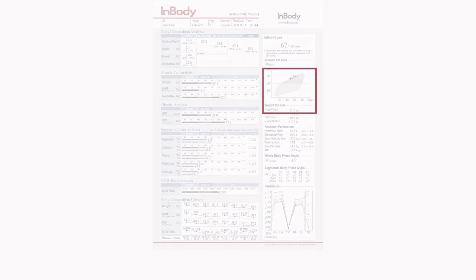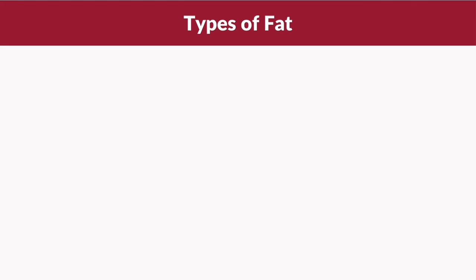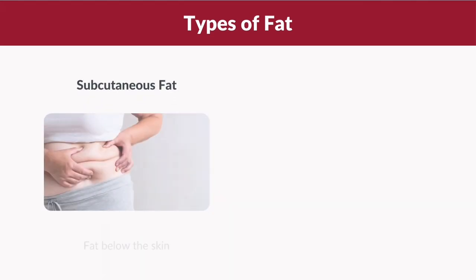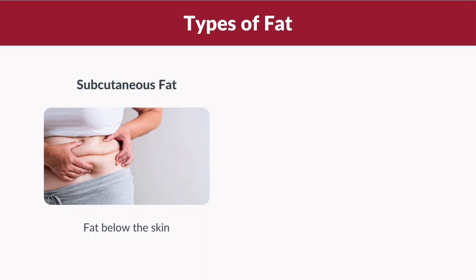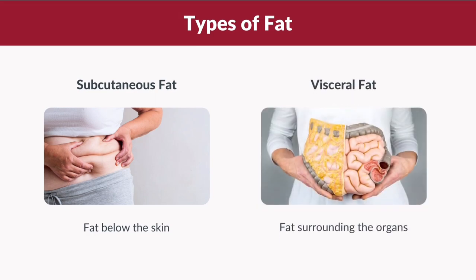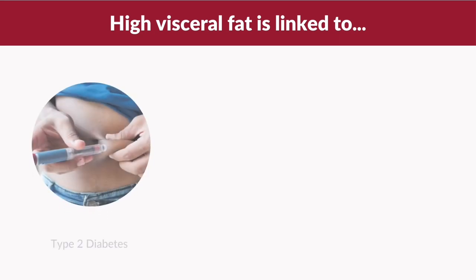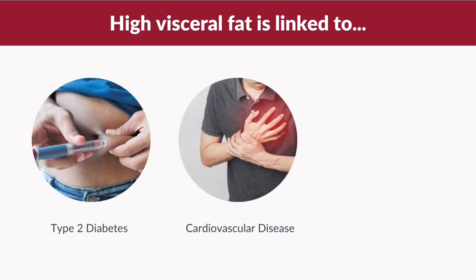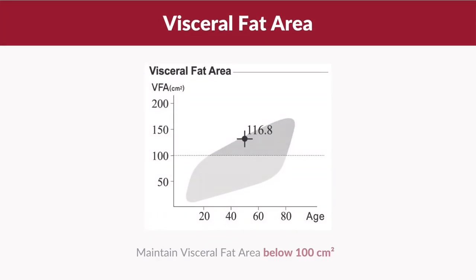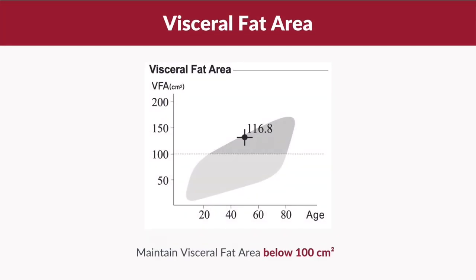There are two types of fat in our body. One is subcutaneous fat, which is the fat below the skin, and the other is visceral fat, which is the fat that surrounds your organs. Visceral fat is the most dangerous kind of fat to have, as high visceral fat is linked to type 2 diabetes, cardiovascular disease, and cancer.